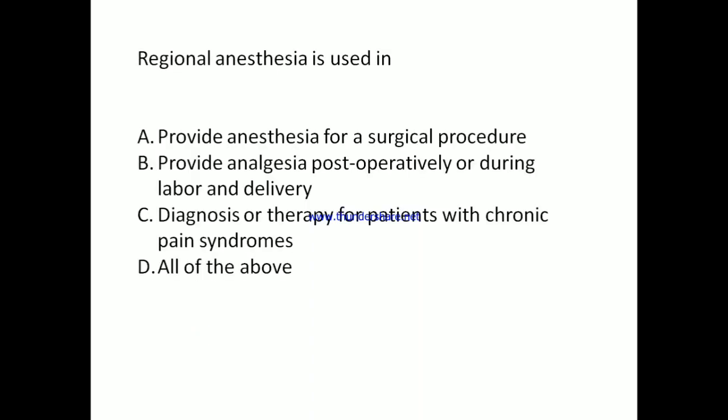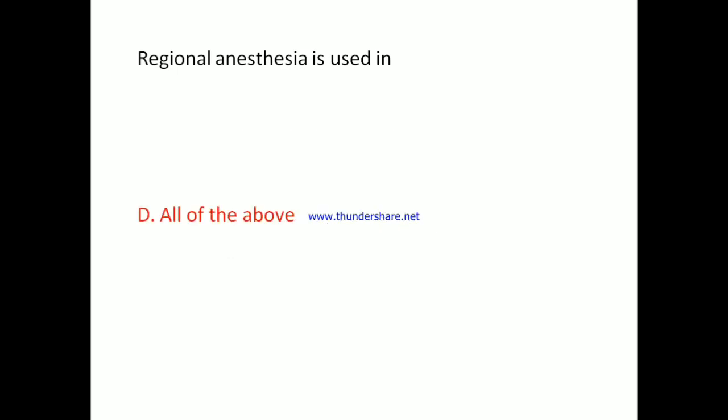Regional anesthesia is used in: A. Provide anesthesia for a surgical procedure. B. Provide analgesia postoperatively or during labor and delivery. C. Diagnosis or therapy for patients with chronic pain syndromes. D. All of the above. Answer: D. All of the above.